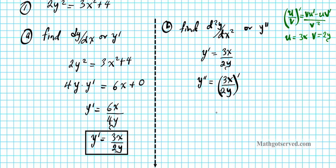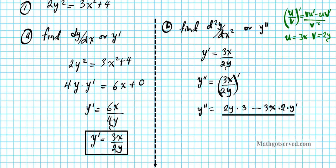Applying the quotient rule: y double prime equals v times u′ — that is, 2y times the derivative of 3x which is 3 — minus u times v′ — that is, 3x times 2y prime (using the chain rule) — all divided by v² which is (2y)² = 4y².